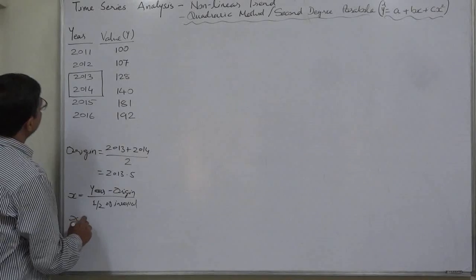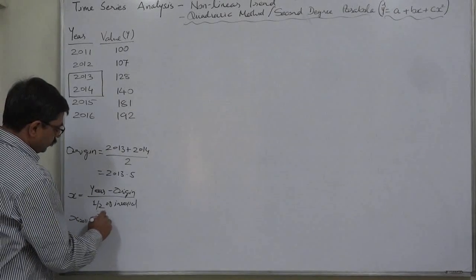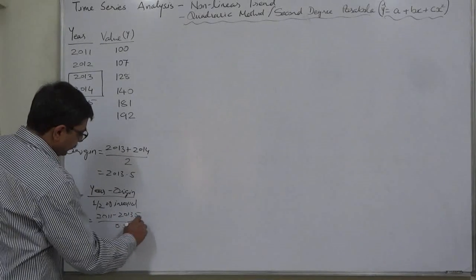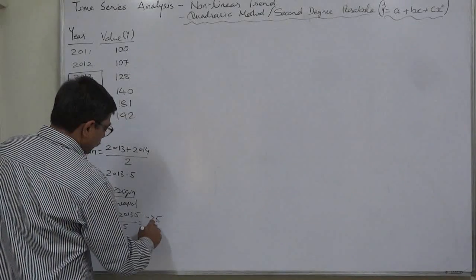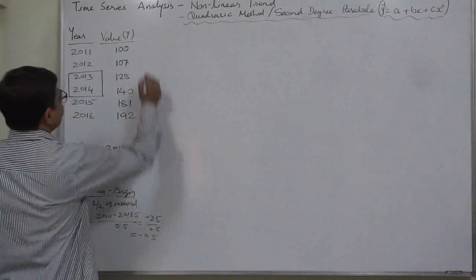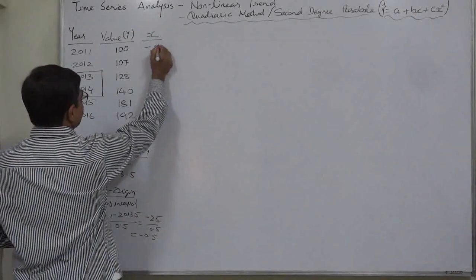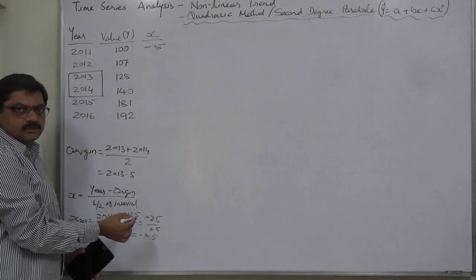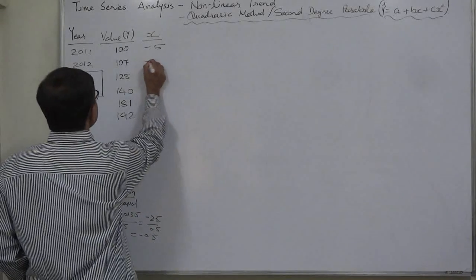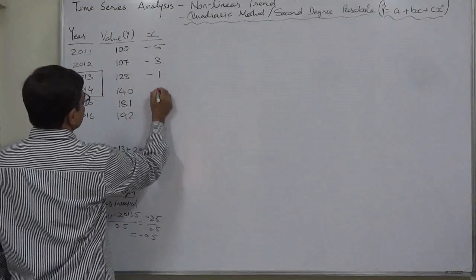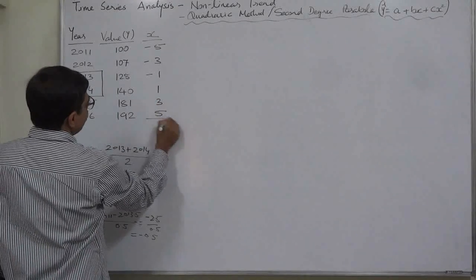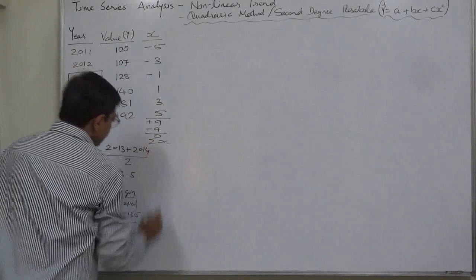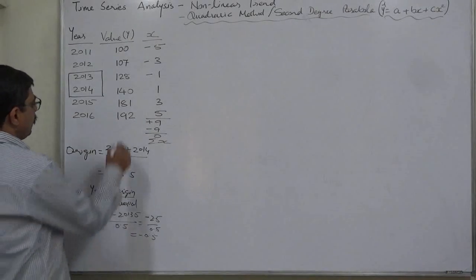X for the year 2011 will be: 2011 minus 2013.5 divided by 0.5, that is minus 2.5 divided by 0.5, which equals minus 5. Similarly, X for 2012 is minus 1.5 divided by 0.5, giving minus 3. The X values are: minus 5, minus 3, minus 1, positive 1, positive 3, positive 5.